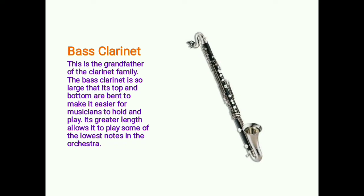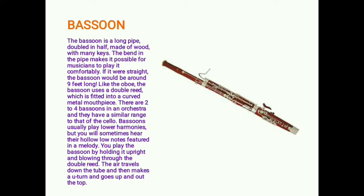The bass clarinet is the grandfather of the clarinet family. It is so large that its top and bottom are bent to make it easier to hold and play; its greater length allows it to play some of the lowest notes in the orchestra. The bassoon is a long pipe doubled in half, made of wood with many keys. The bend makes it comfortable to play — if it were straight, the bassoon would be around nine feet long. Like the oboe, the bassoon uses a double reed fitted into a curved metal mouthpiece. There are two to four bassoons in an orchestra, with a range similar to that of the cello.